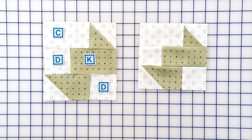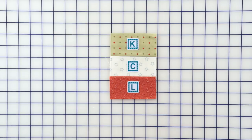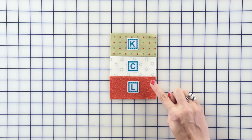The next unit is super simple, and it's great to chain piece just to get it done super quick. You're just going to put together your fabric K, C, and L rectangles and press away from the center. You're going to have four for each block.